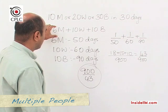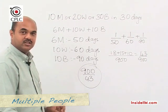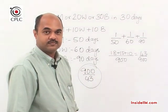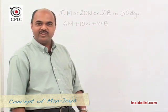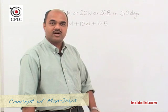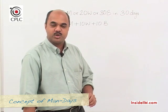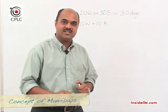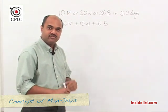We found the time for 6 men, 10 women, and 10 boys individually, then combined using one day's work to get 900/43 days. Another way to solve this is using the concept of man-days, which refers to the quantum of work to be done. For example, if 10 men complete work in 5 days, then 10 × 5 = 50 man-days is the total work.